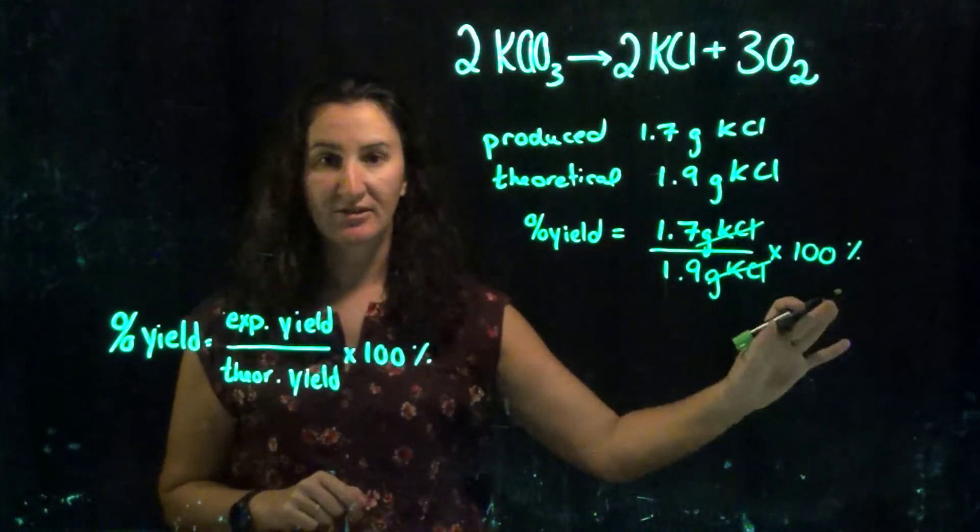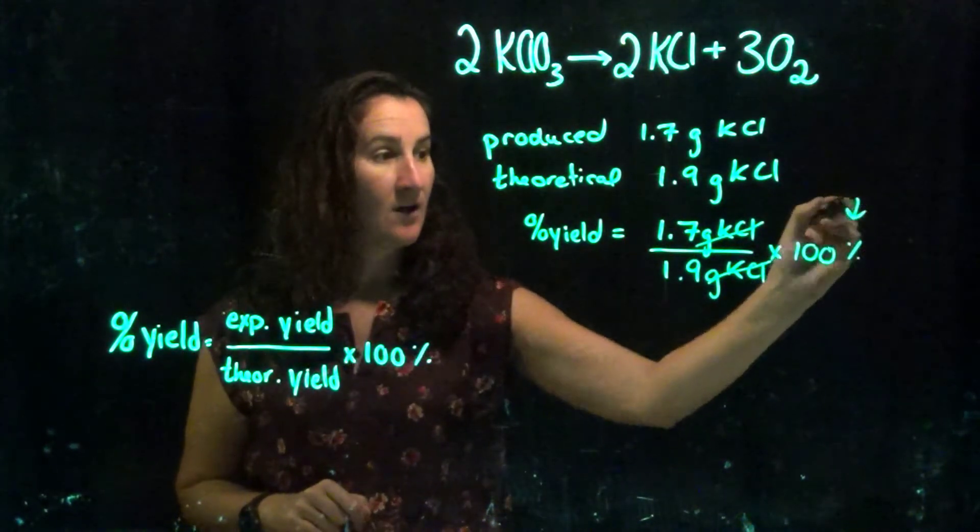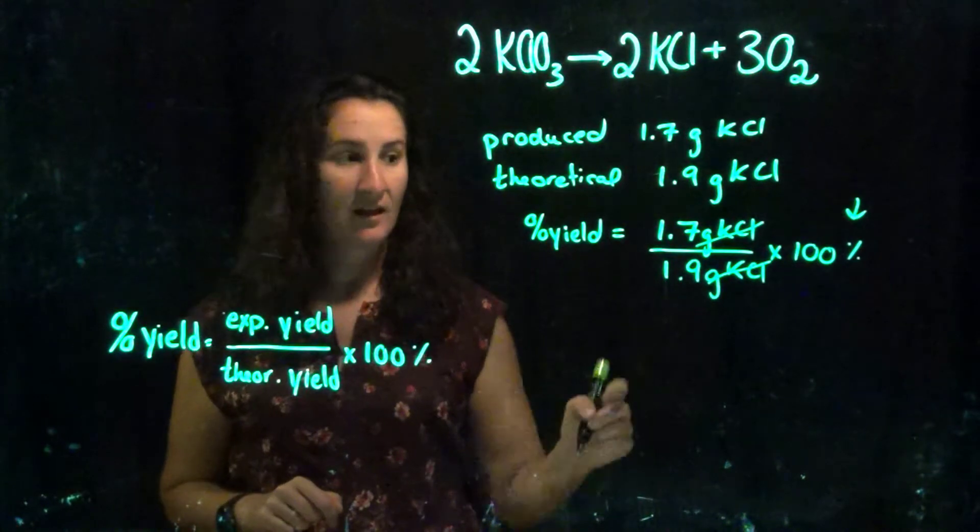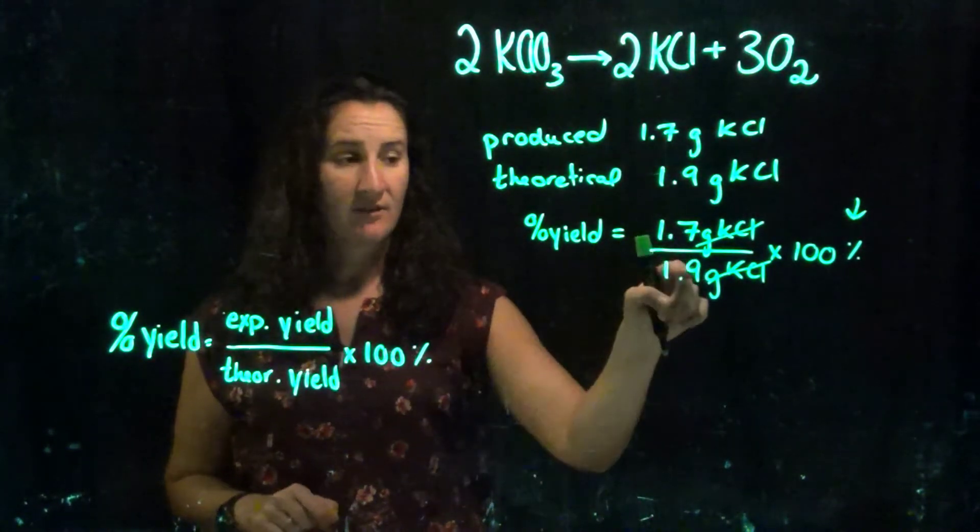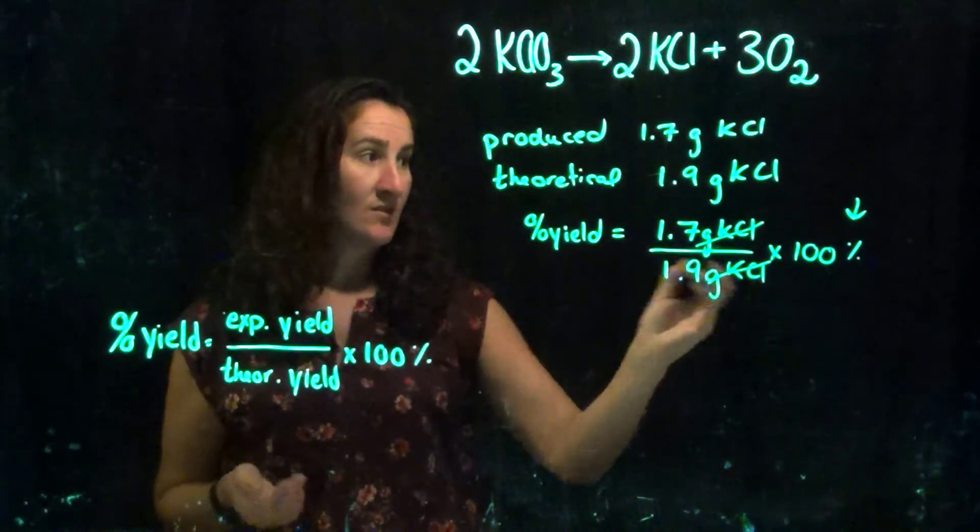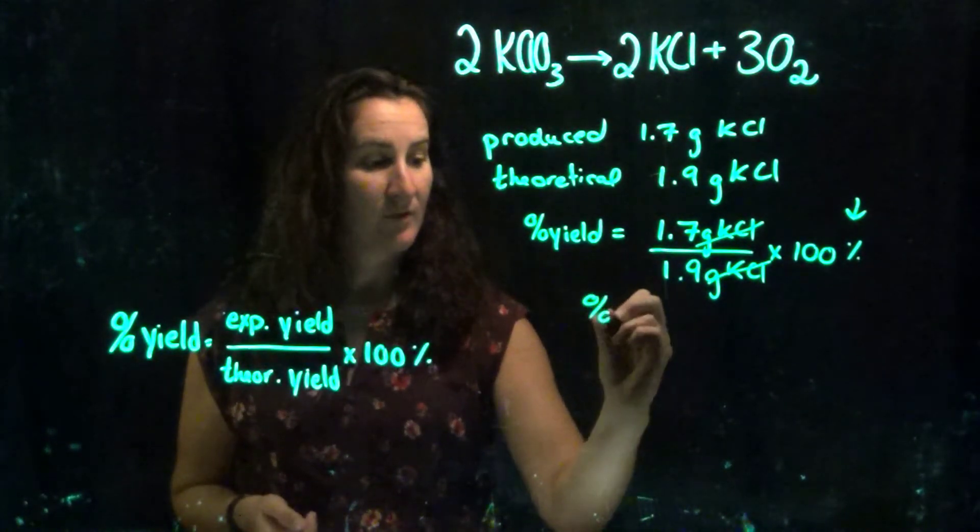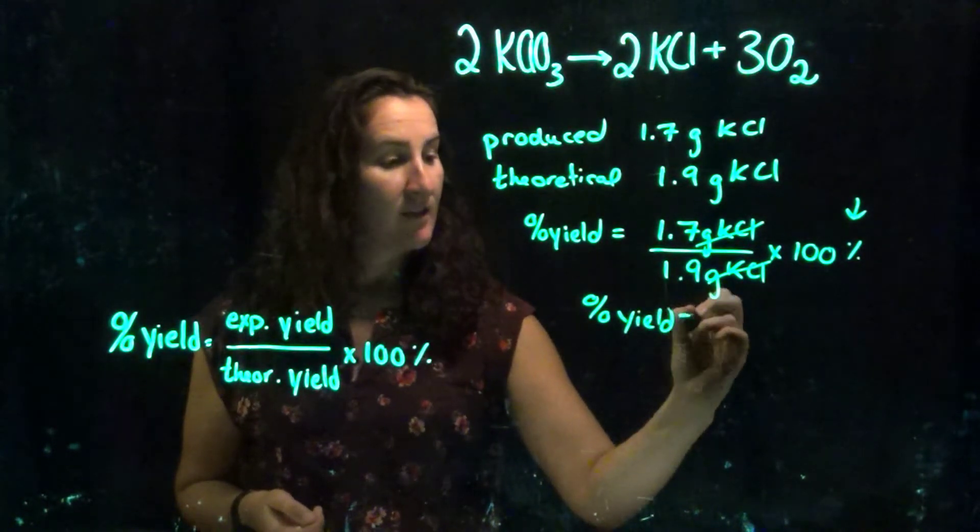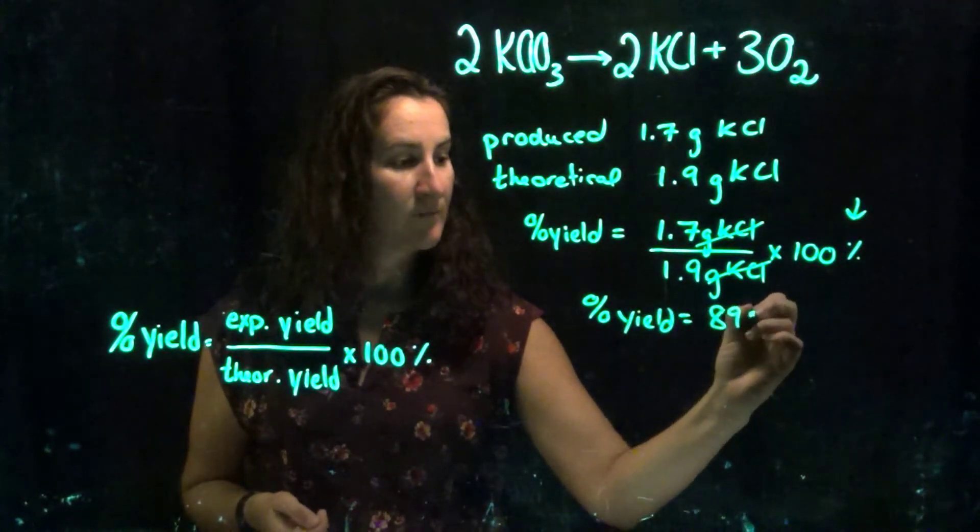Now notice your grams are going to cancel, so it's not like grams percent or anything. My only units are this percent sign that are remaining. So you would just, in your calculator, 1.7 divided by 1.9, enter, times 100, and then my units are percent. So in this example, we end up with a percent yield equal to 89%.